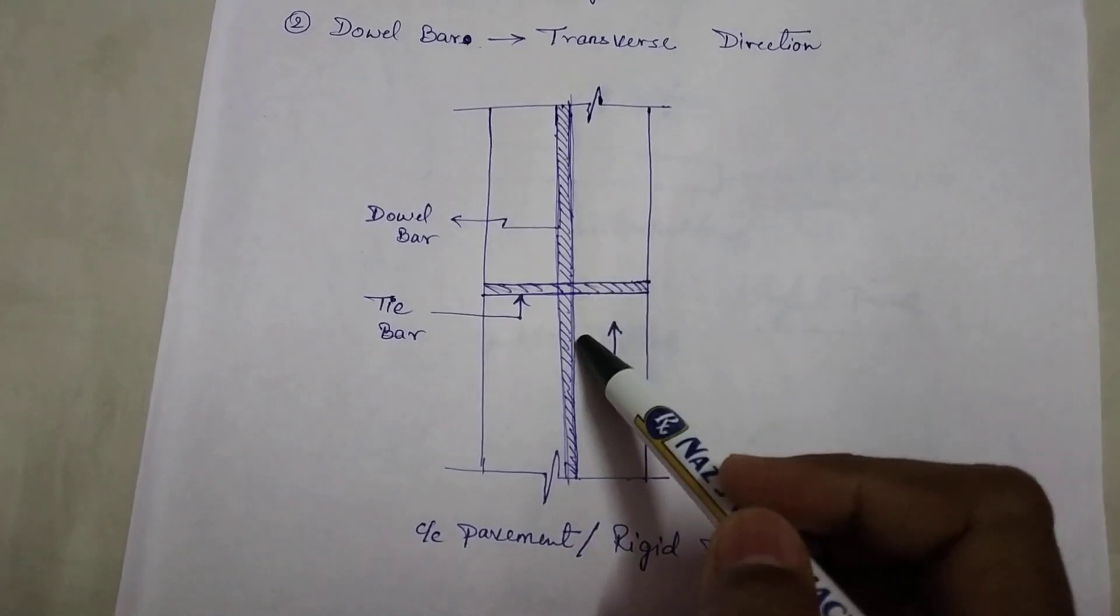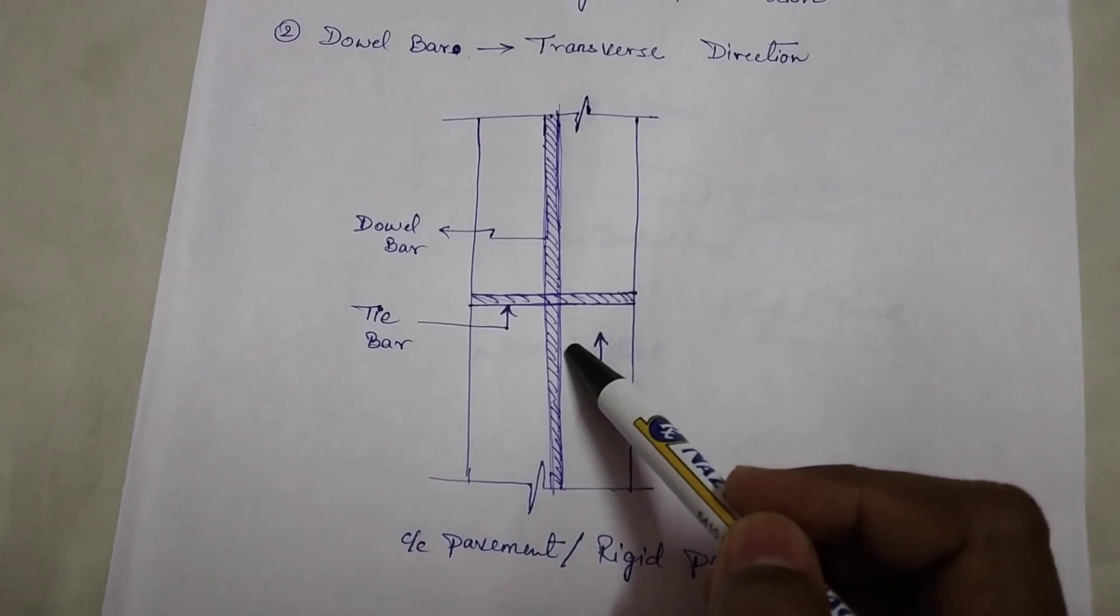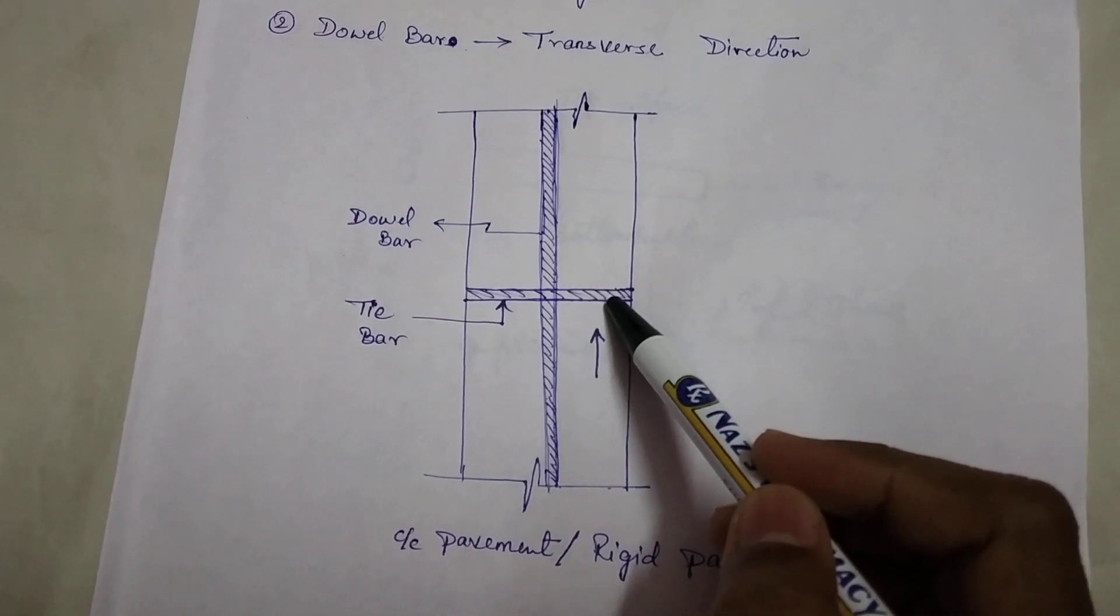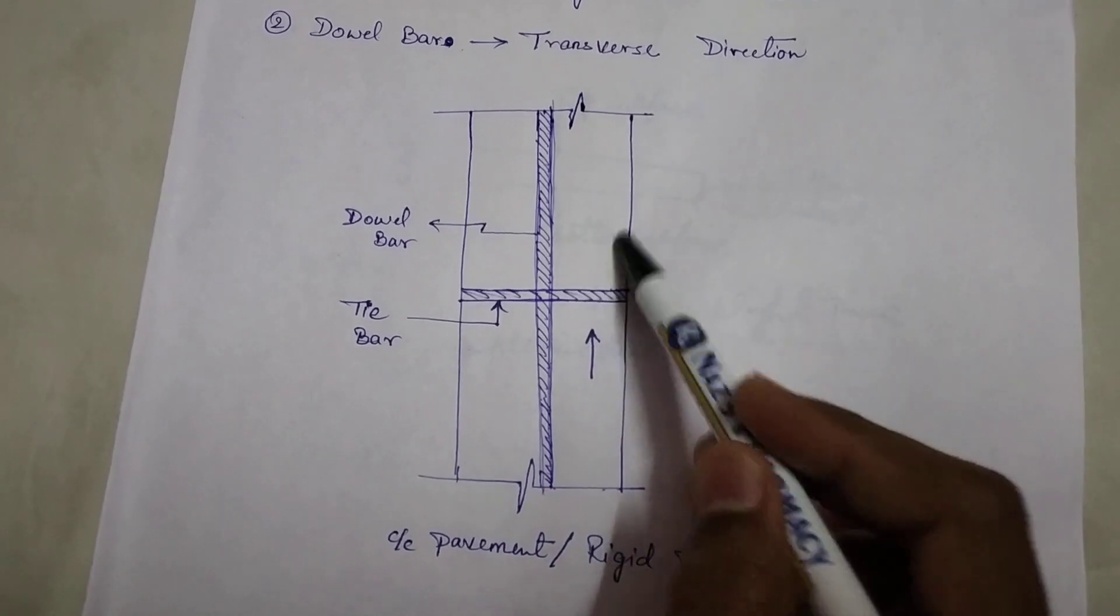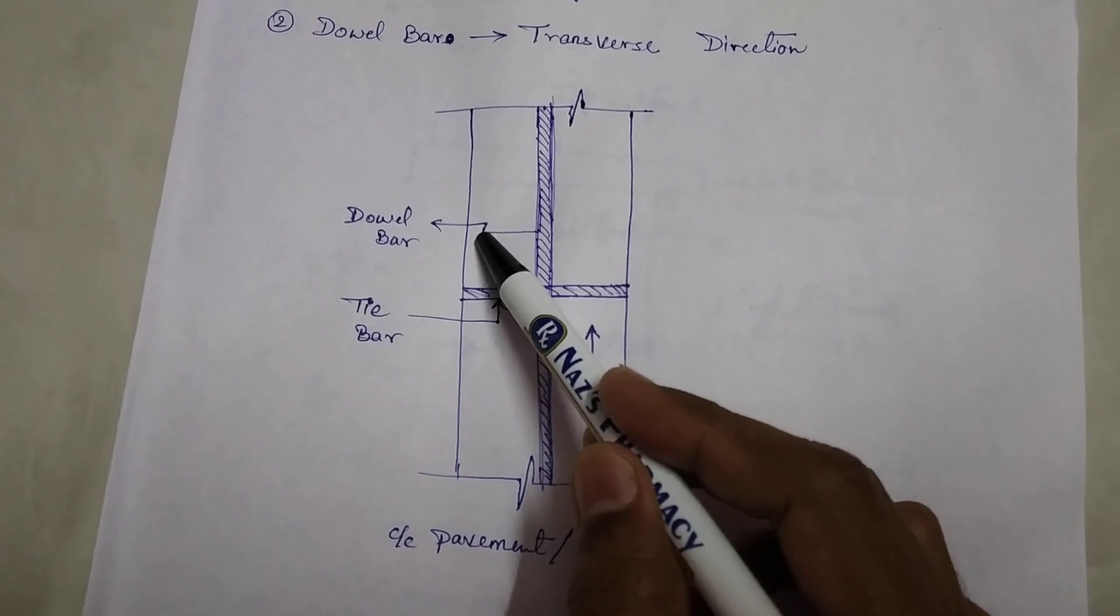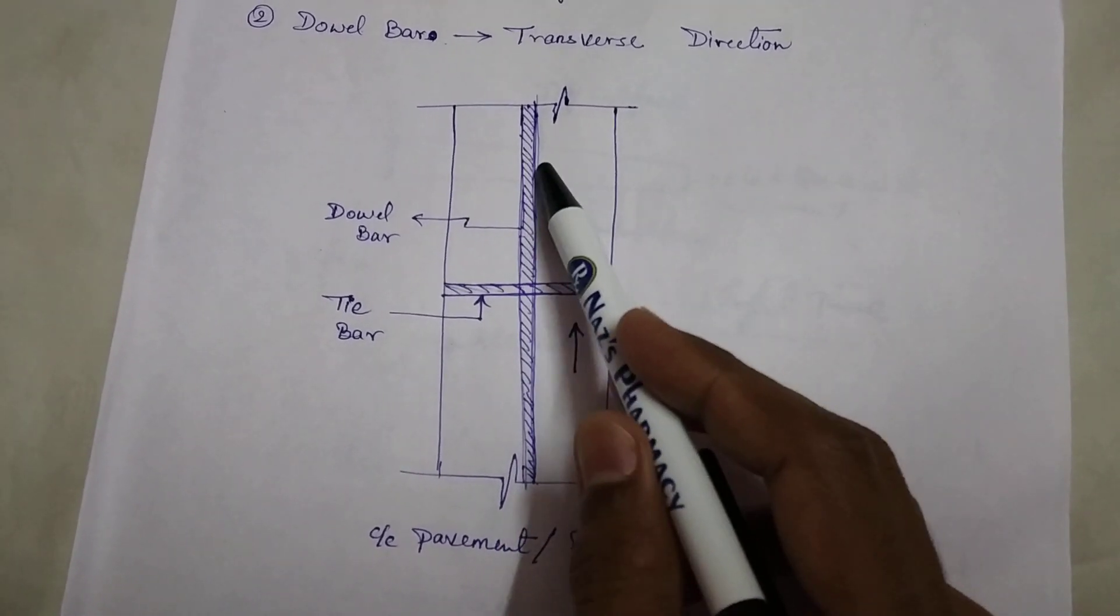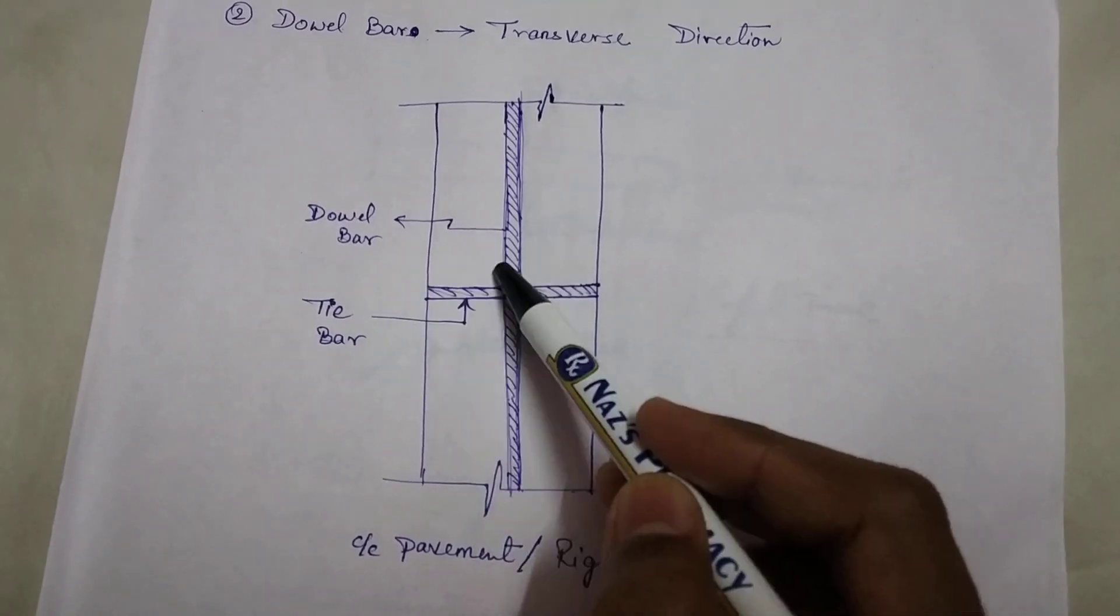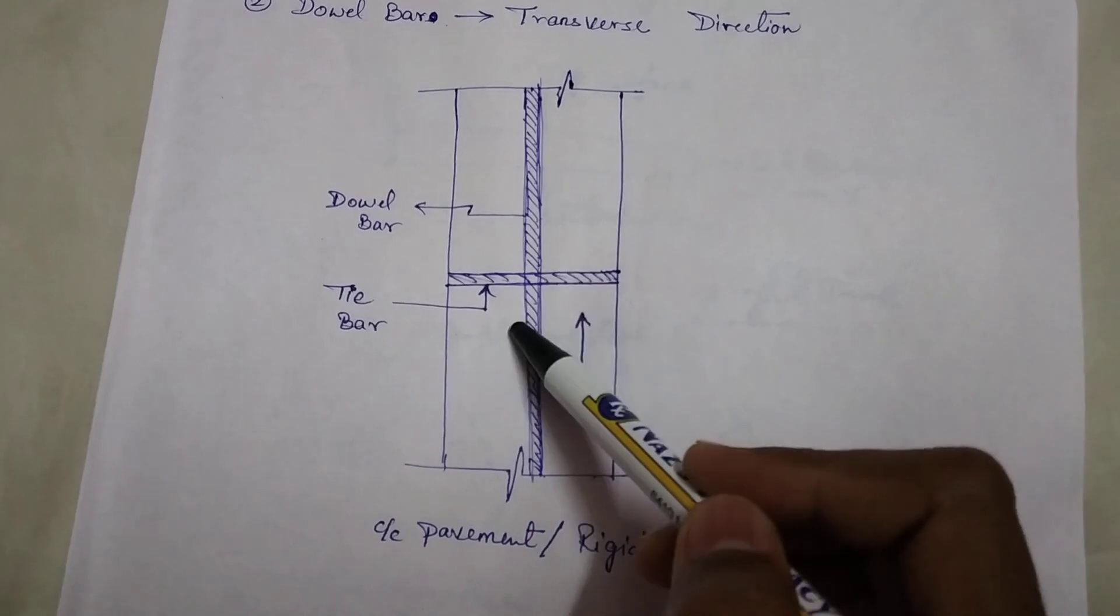Now what is the use of tie bar and dowel bar? The use of tie bar is they resist the separation of materials from each other. And the use of dowel bar is it takes the load of the vehicle which is coming on the pavement and that load is transferred to the base of the pavement or to the ground below the pavement.